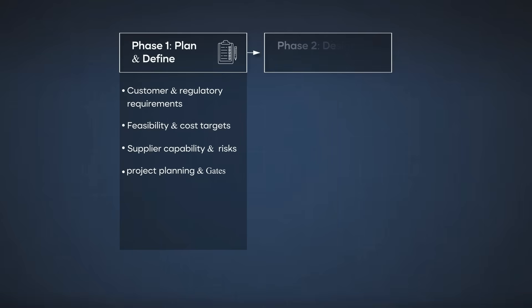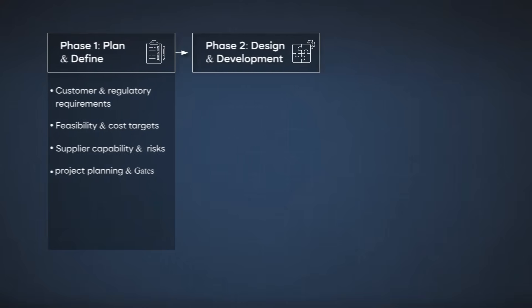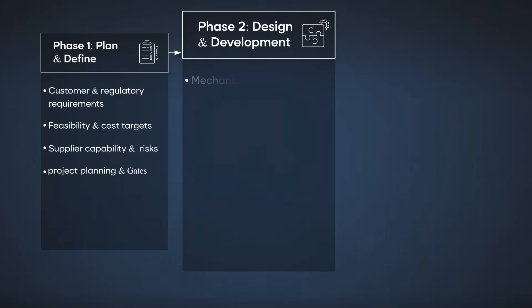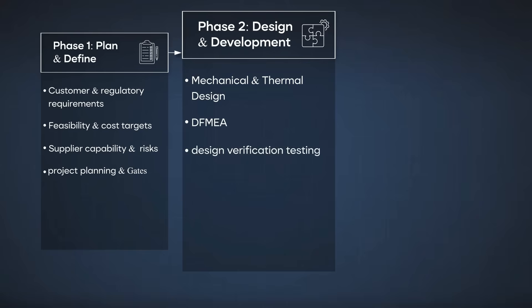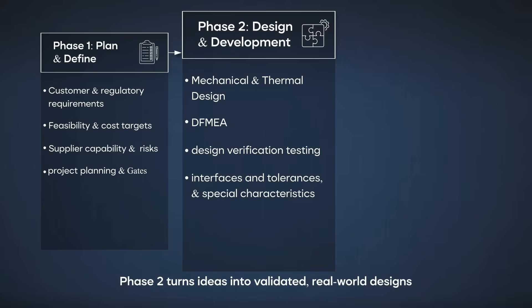Then comes phase two: product design and development. This is where ideas start turning into tangible designs. Activities here include developing the product design — mechanical layout, electrical schematics and 3D models — performing DFMEA (design failure mode and effects analysis) to identify potential design weaknesses, planning and conducting design verification testing such as vibration, thermal cycling or environmental durability, and defining interfaces and tolerances while calling out special characteristics on drawings. At this point, design and quality teams work closely to ensure risks are designed out early, not discovered later in production.